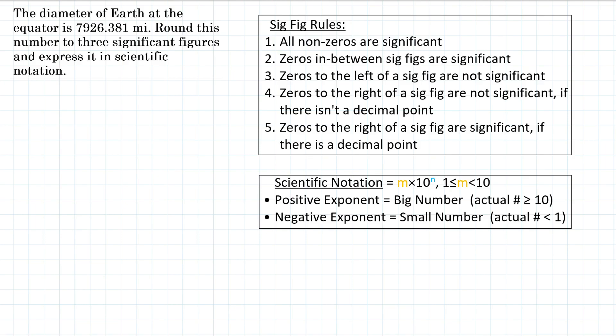Okay, so the problem gives us this measurement here, the diameter of the Earth, 7,926.381 miles. So we first want to round that number to three significant figures and then express it in scientific notation.